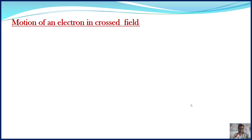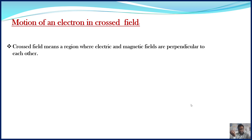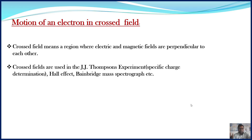Now, consider a special case where an electron is moving through the region of crossed field. What is the meaning of crossed field? Crossed field is a region where electric and magnetic fields are present, but those fields are perpendicular to each other. Crossed fields are generally used in some experiments like J.J. Thomson's experiment, Hall effect, and Bain-Bridge mass spectrograph, etc.